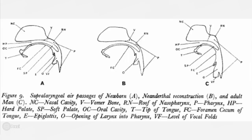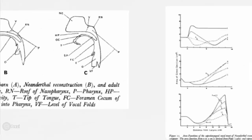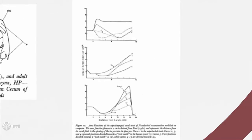Here we have a depiction of the airway. Once again, you can see a very similar shape for Neanderthal and newborn. At the same time, for adult men, they're much longer or taller than they are wide. This next picture shows a little bit about the area functions.